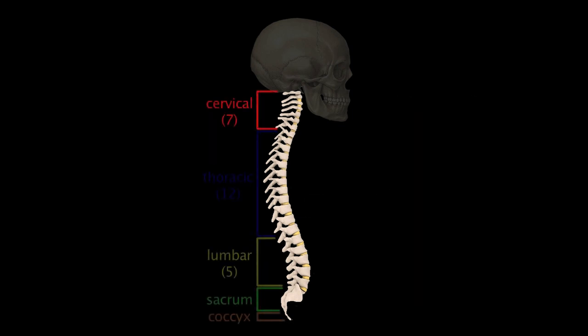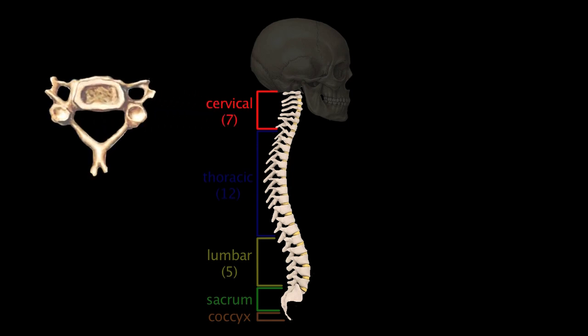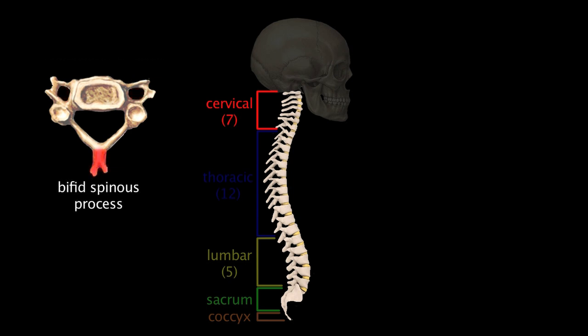Individual vertebrae demonstrate characteristic features identifying them as belonging to one of these five regions. Cervical vertebrae form the skeleton of the neck. They are the smallest of the 24 movable vertebrae, and the smaller size reflects the fact that they bear less weight than the larger vertebrae inferior to them. They contain distinctive transverse foramina in their transverse processes, which allow the passage of vertebral veins and arteries, and they also typically have a bifid spinous process, meaning that it's separated into two parts as shown here.